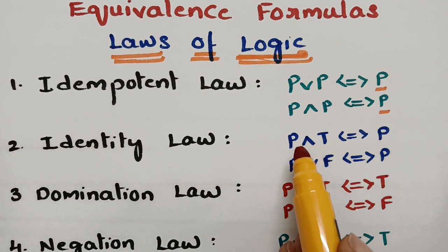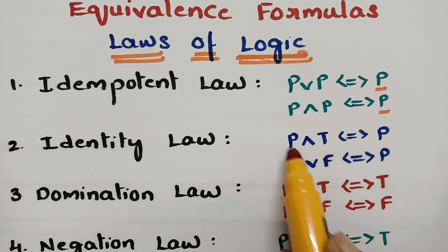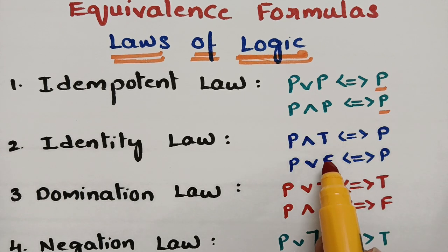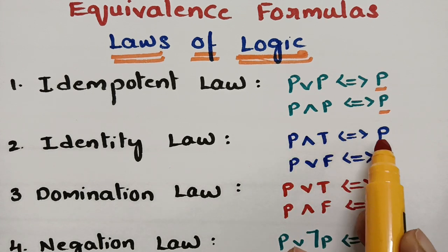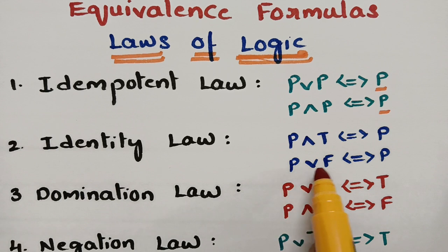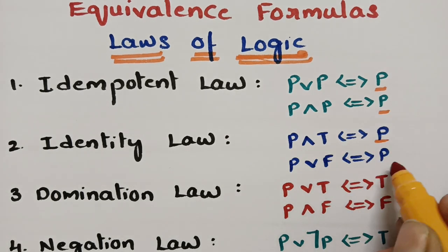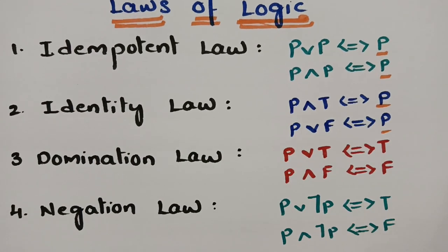Next one is the identity law. Think of looking at a mirror — you will be exposed, meaning you see yourself. Here, true and false act like a mirror. So p AND true is again p, and p OR false is again p. This is the identity law.